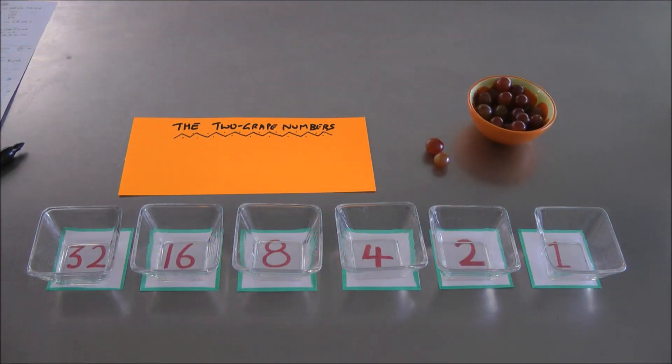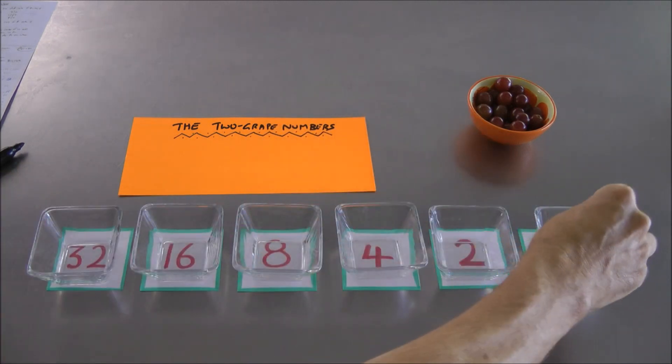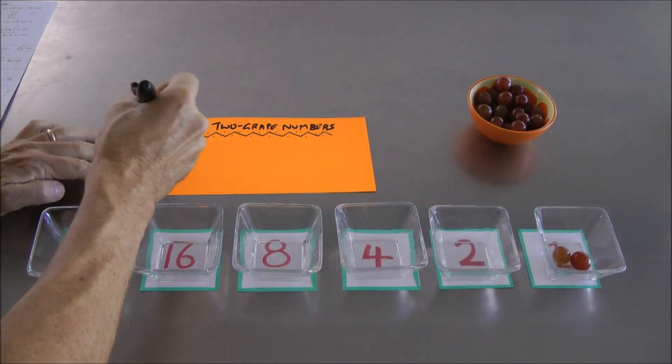Okay, here's another puzzle about the grape codes of numbers. Here are just two grapes. I could put them in the first bowl and that represents the number 2.